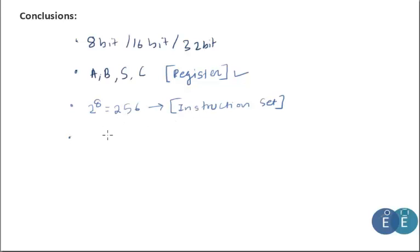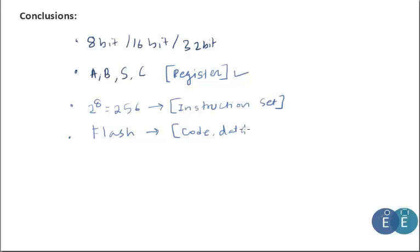A group of instructions written to perform a task is our program, stored in flash memory — a permanent memory used to store code and data. Since flash is not the fastest memory, data is copied into RAM, which is faster and used by the CPU during execution.